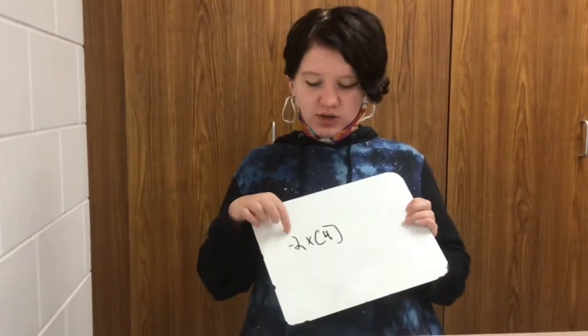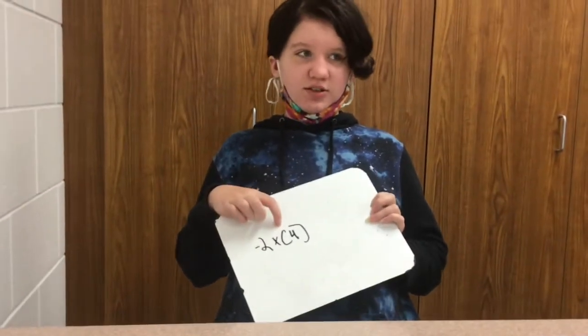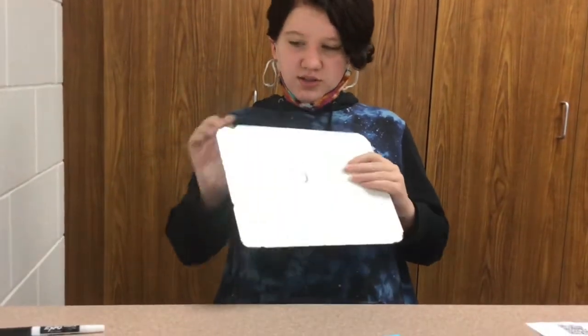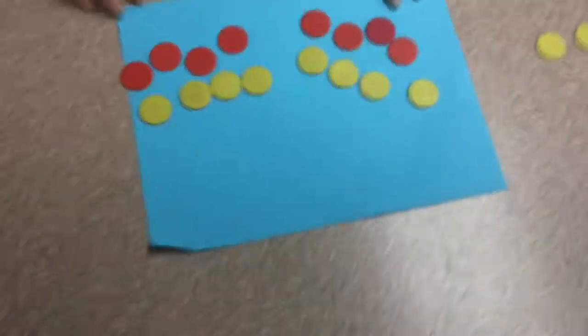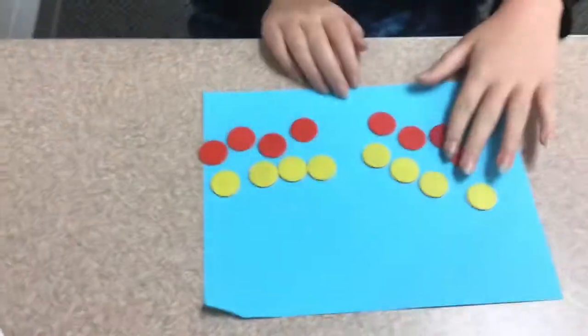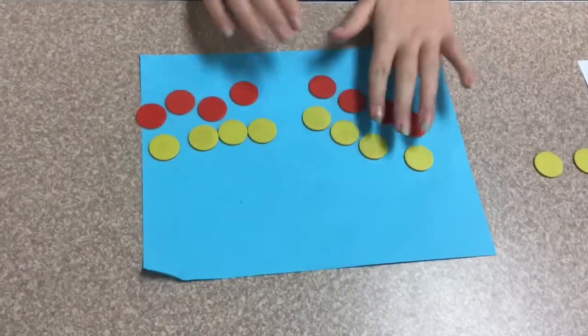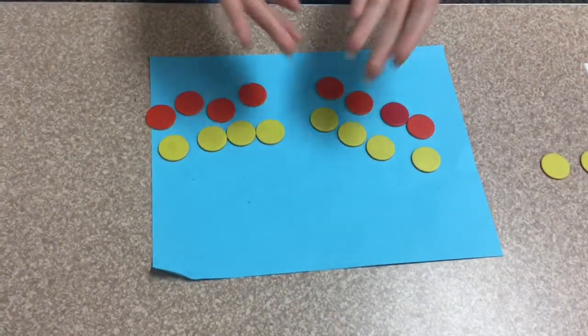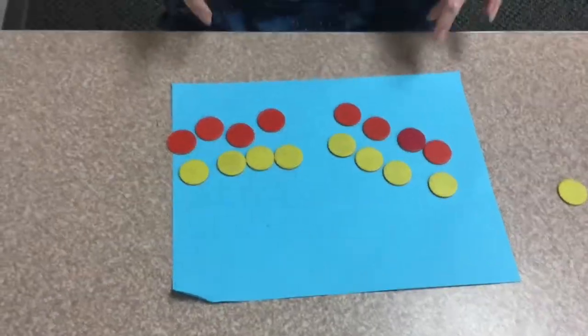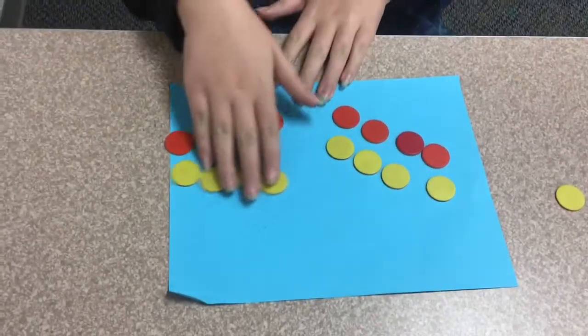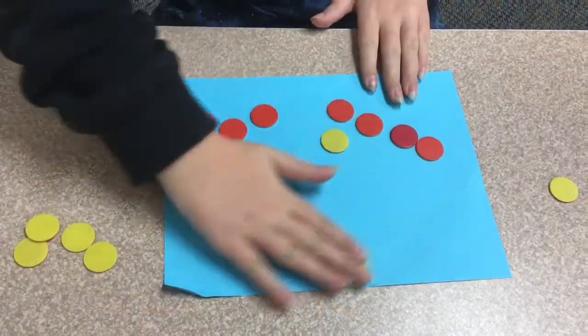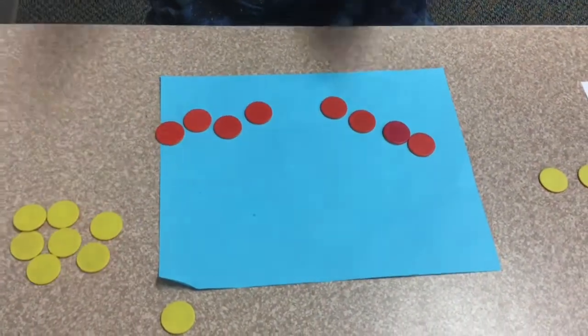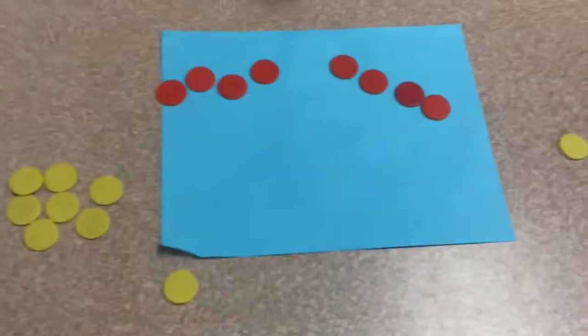And lastly, we are going to do negative 2 times positive 4. Two groups of positive 4. But then we have to make groups of 0, so we take away our positives. And our answer is negative 8.